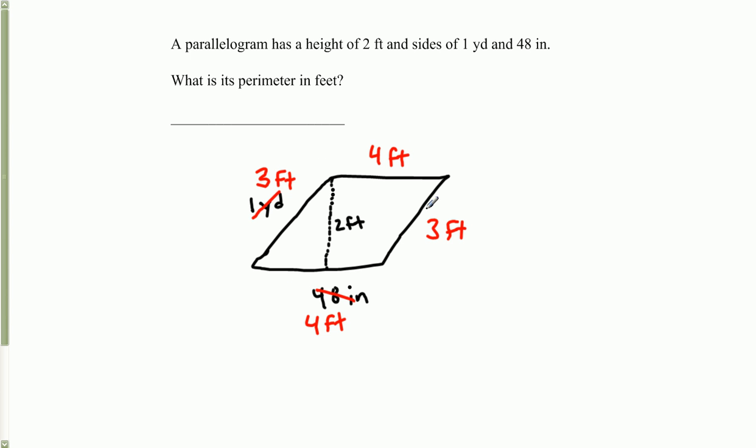And now to find perimeter, we just need to add up all the sides. So the perimeter is going to equal 3 feet plus 4 feet plus 3 feet plus 4 feet. So if we do the math, 3 plus 4 is 7, plus 3 plus 4 is 7, equals 14. So the answer here is 14 feet.